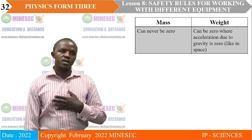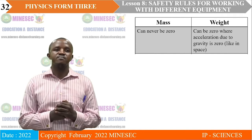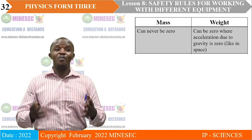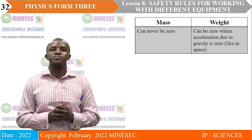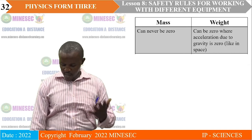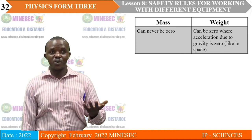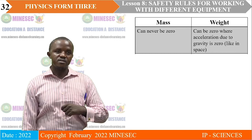Mass can never be zero. Unlike mass, weight can be zero where acceleration due to gravity is zero, like in deep space — if an object is in deep space with no large mass nearby, its weight will be zero. People at the International Space Station experience weightlessness. In a lift, you also experience a sense of weightlessness, which doesn't necessarily mean that acceleration due to gravity is zero, but your apparent weight is zero under those conditions.